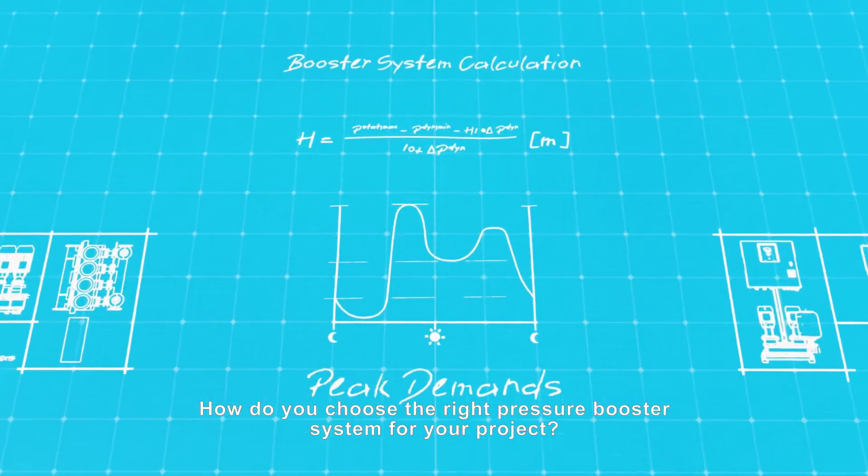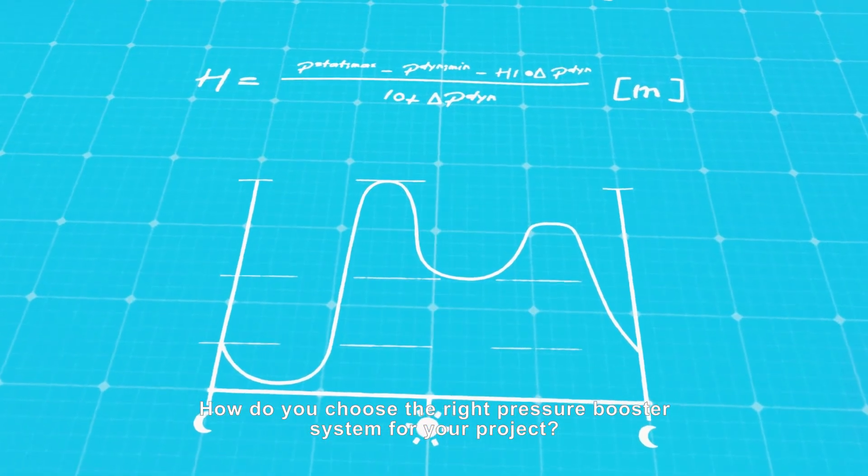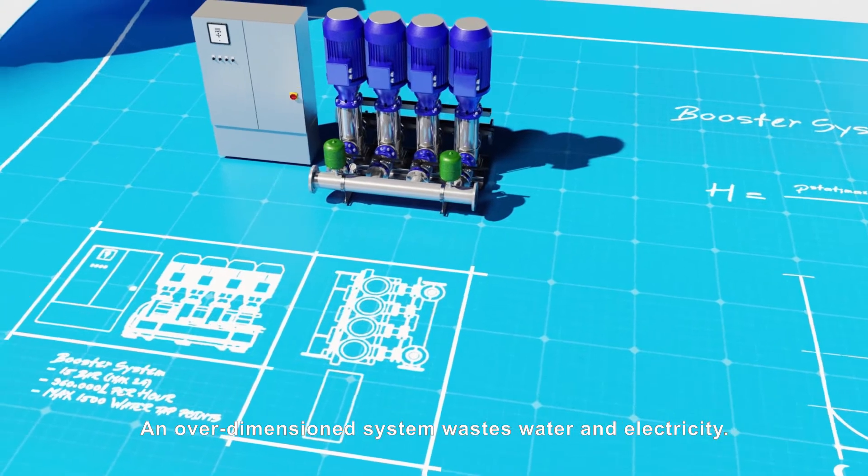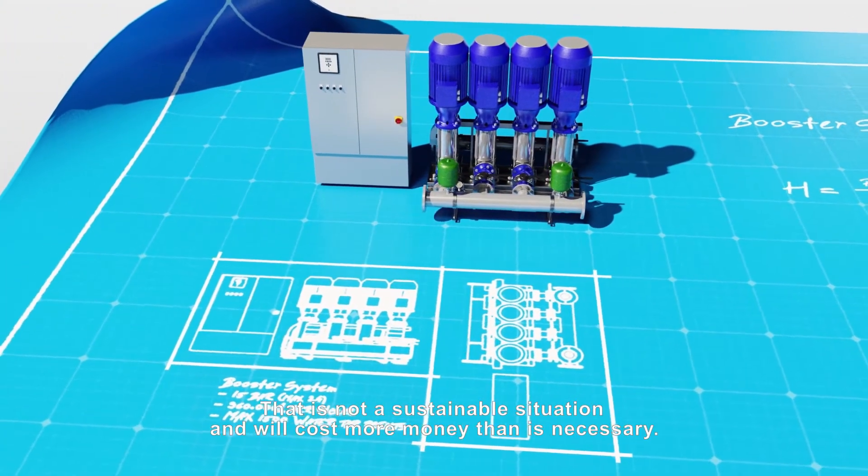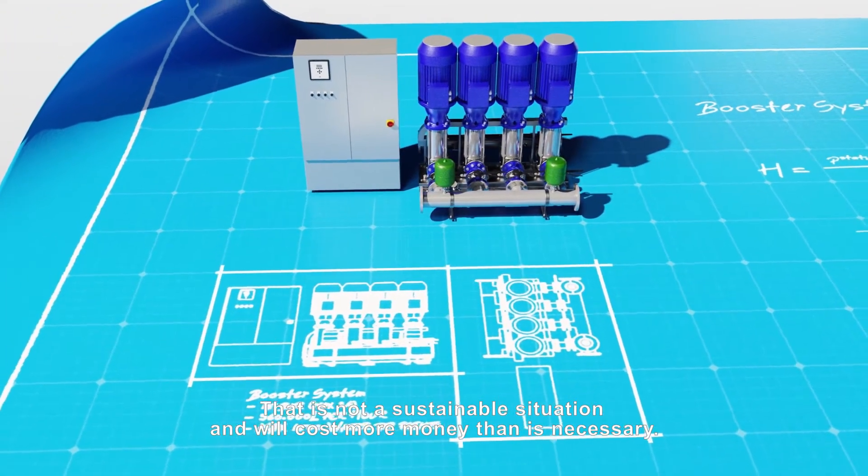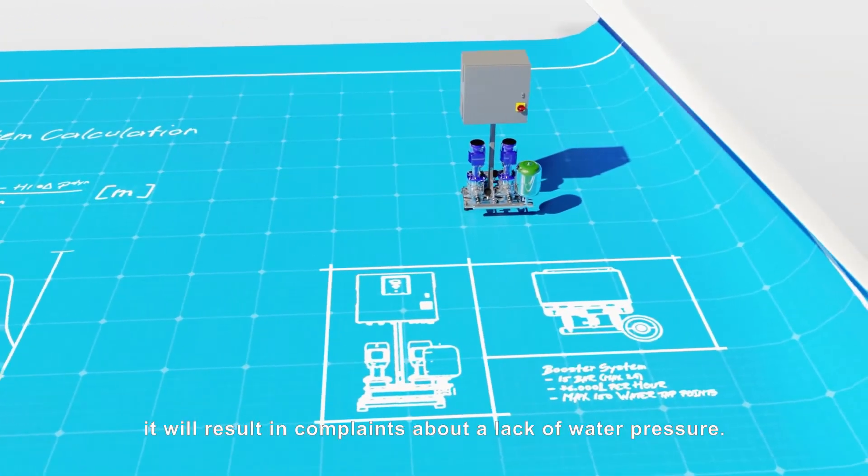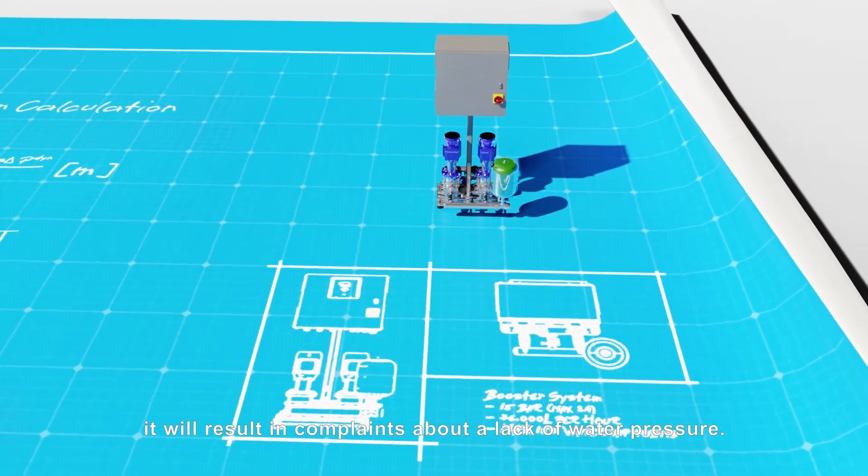How do you choose the right pressure booster system for your project? An over-dimensioned system wastes water and electricity. That is not a sustainable situation and will cost more money than is necessary. If the system is too small, it will result in complaints about a lack of water pressure.